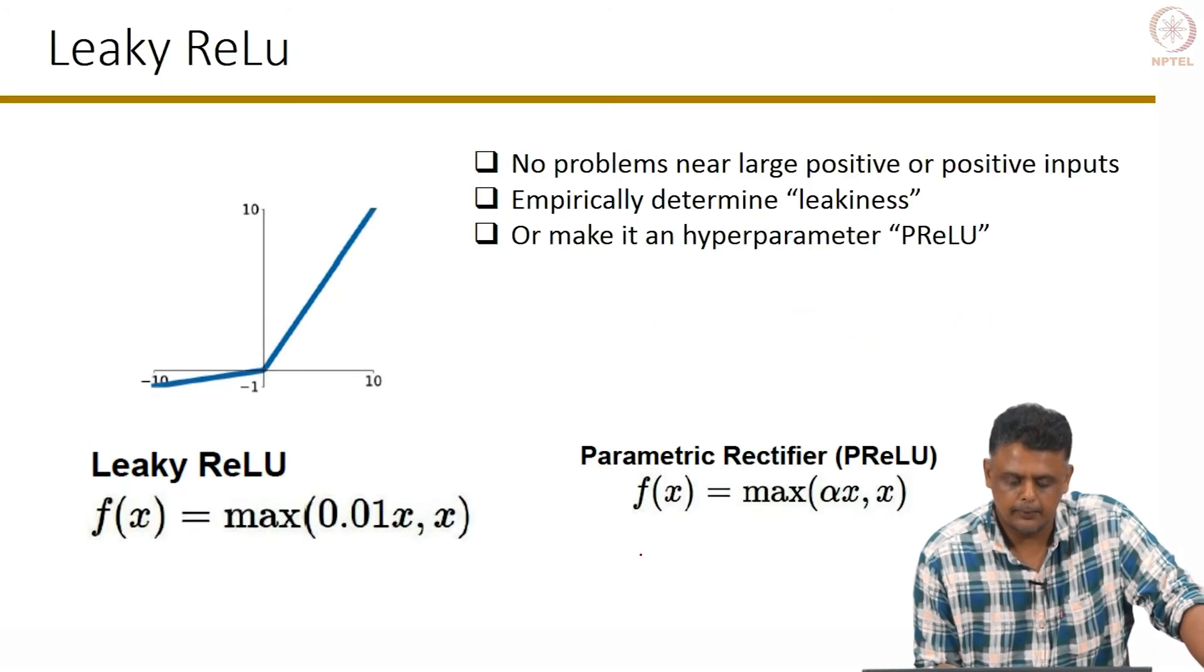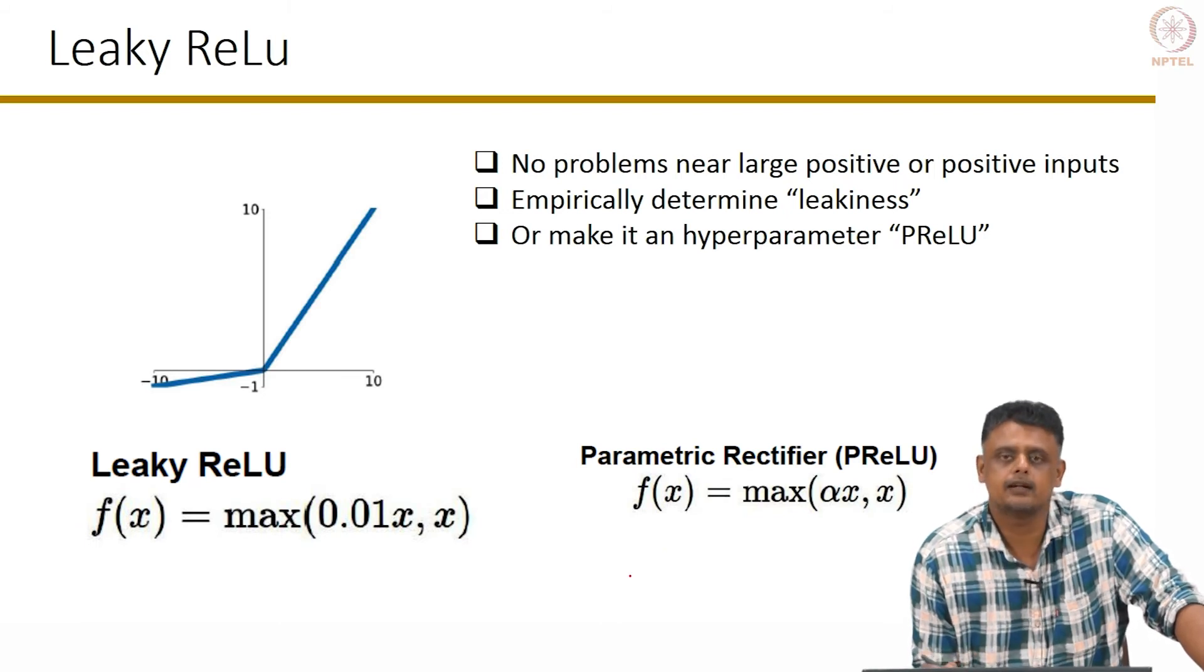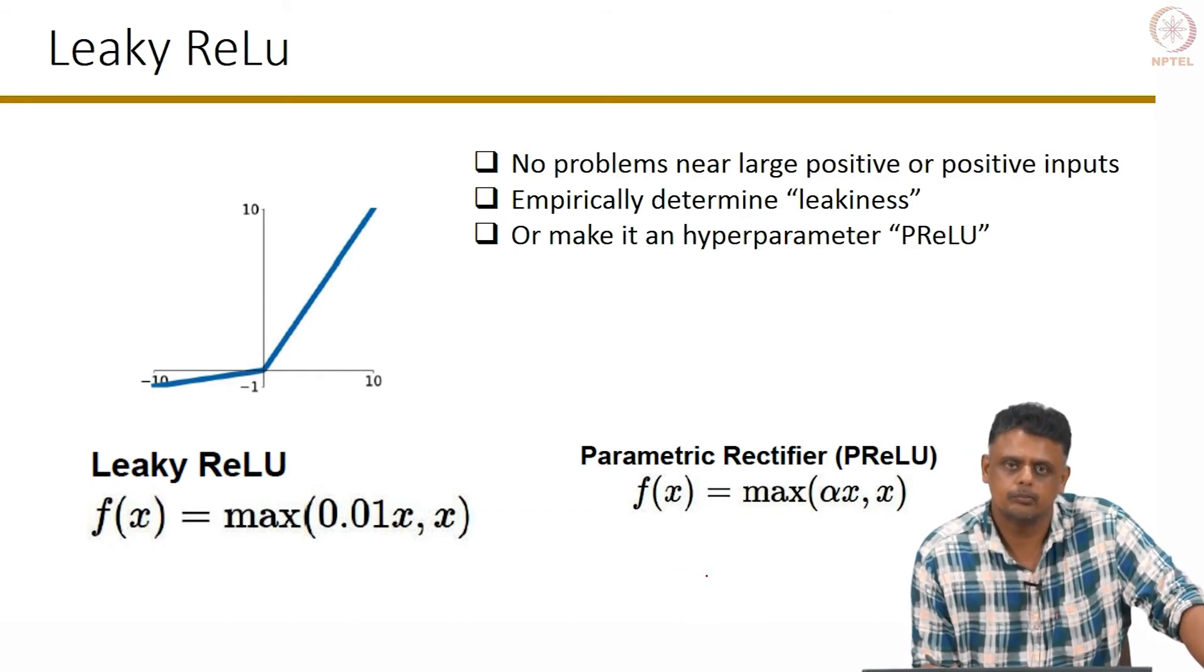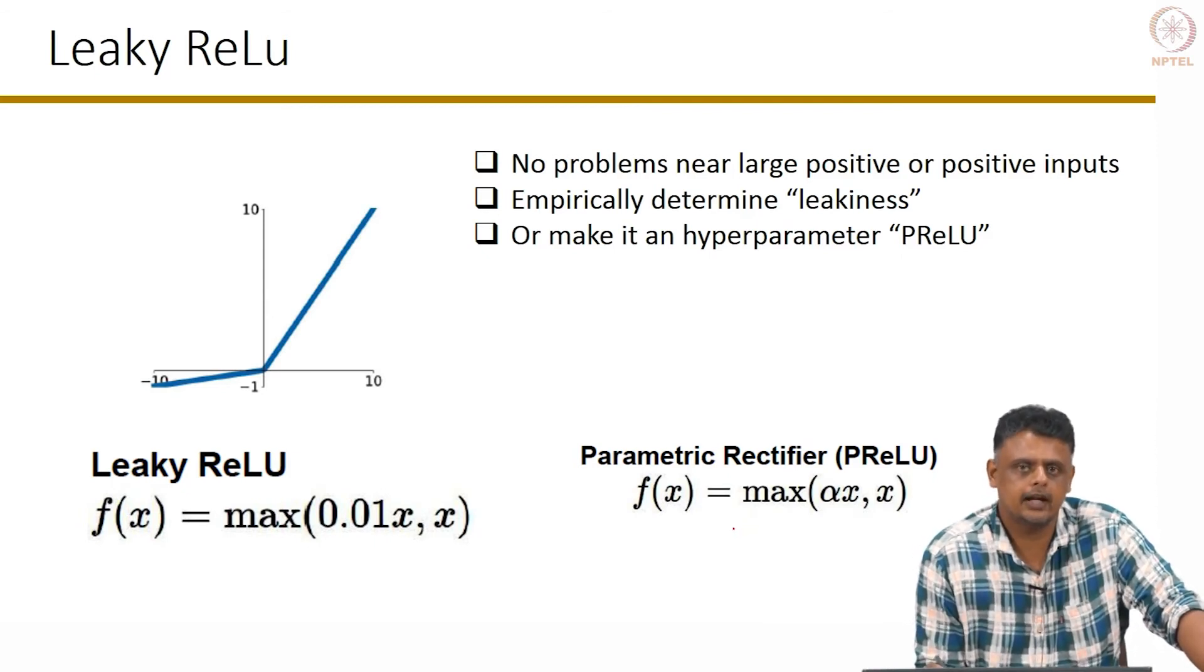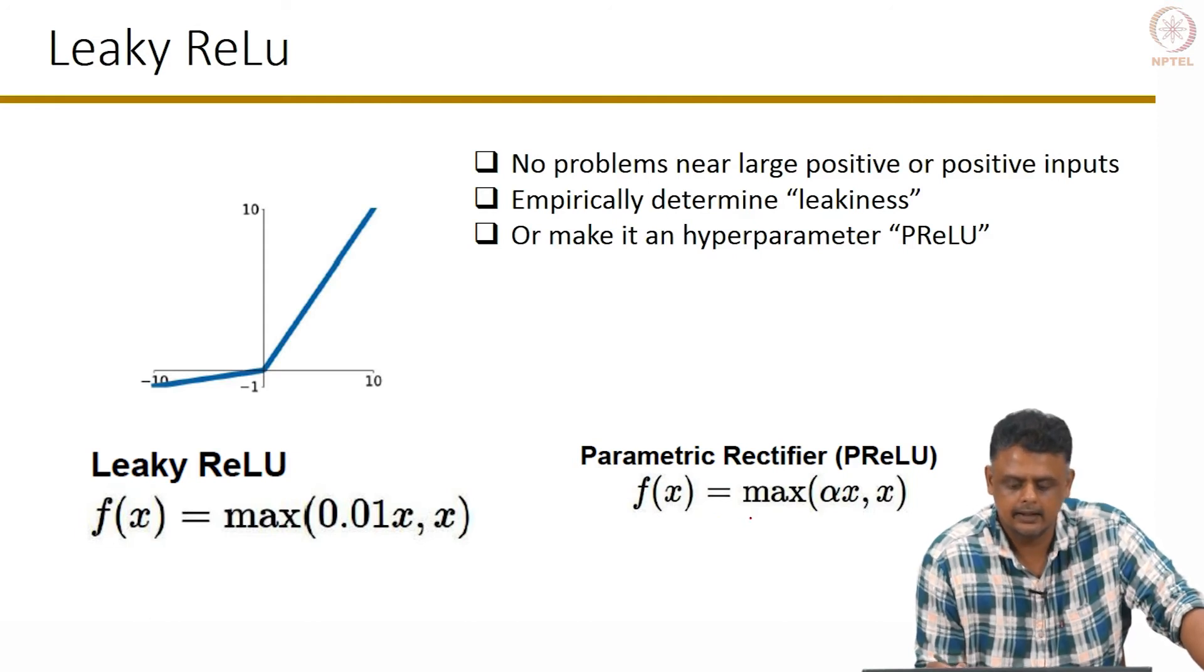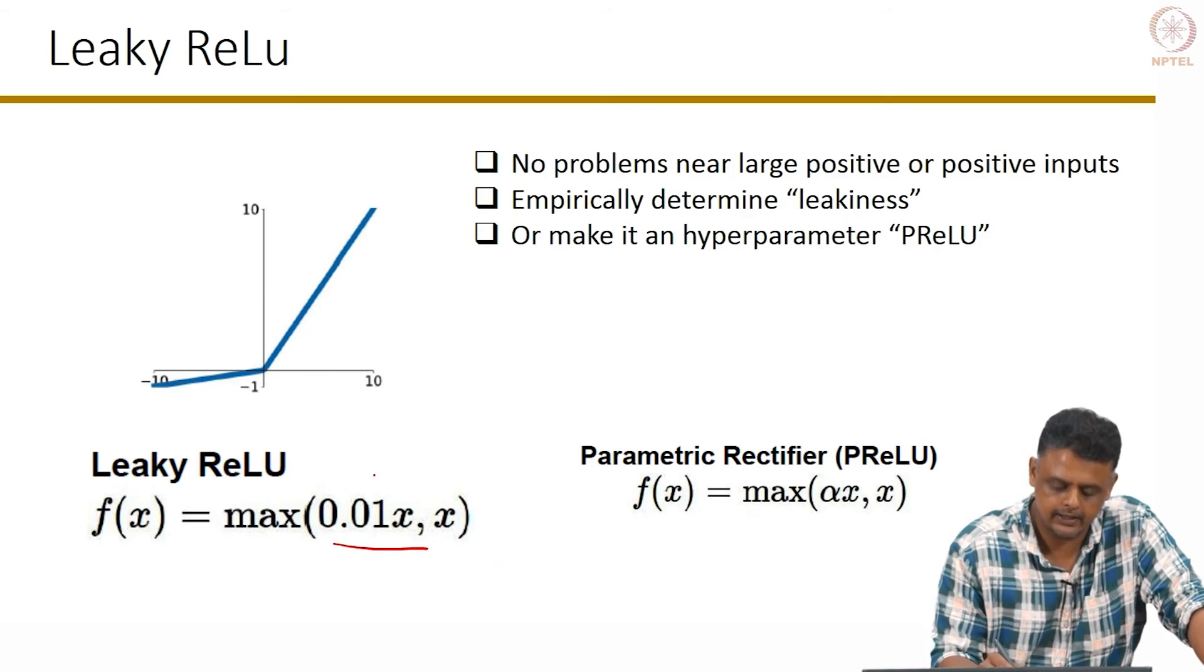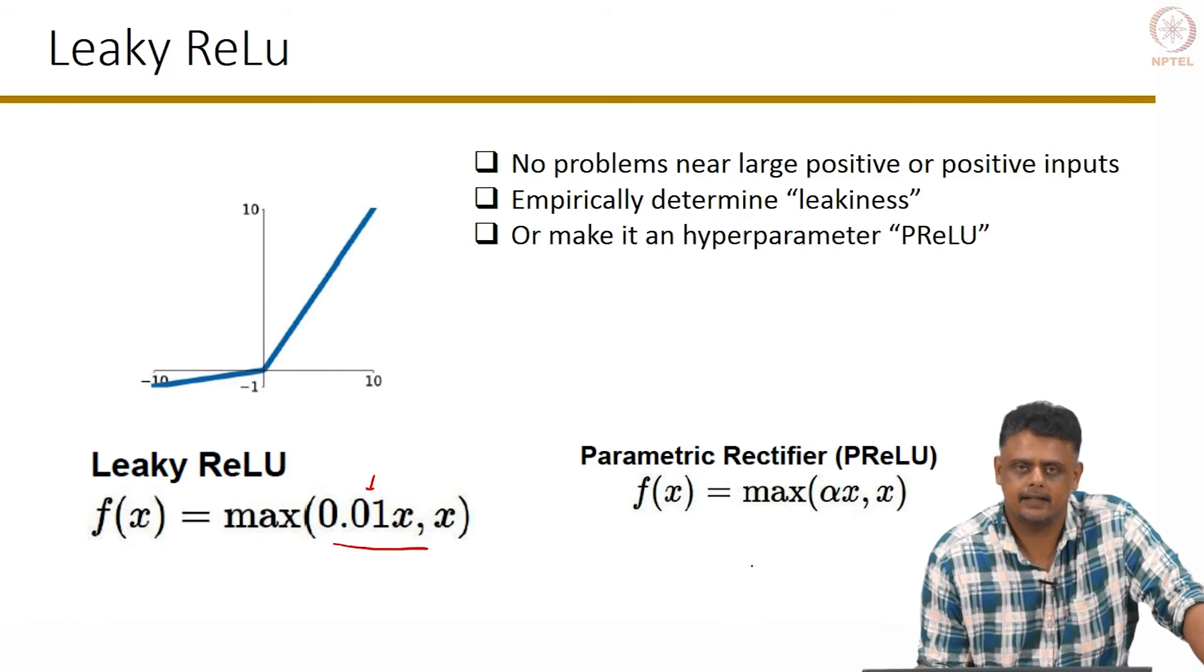The leaky ReLU was designed to take care of some of the problems that ReLU had, since it gives you a small gradient value for negative values of the input. In the previous slide we saw that for a plain ReLU, if the input was negative then your gradient also goes to 0. But in this case, for all negative values of x it will give you a scaled value of that input, which means that the gradient can exist.